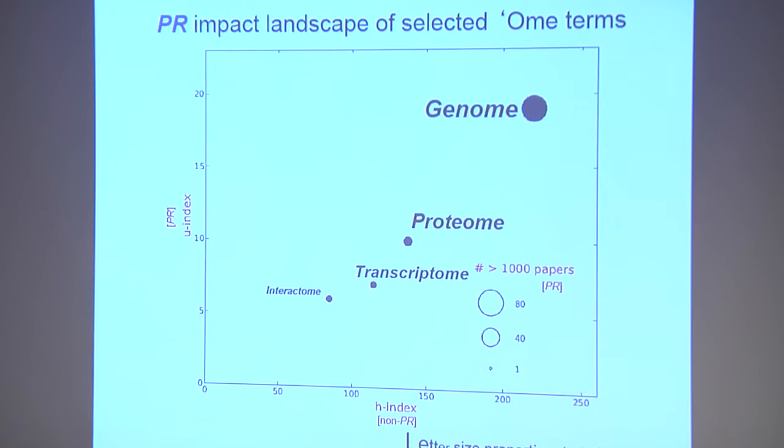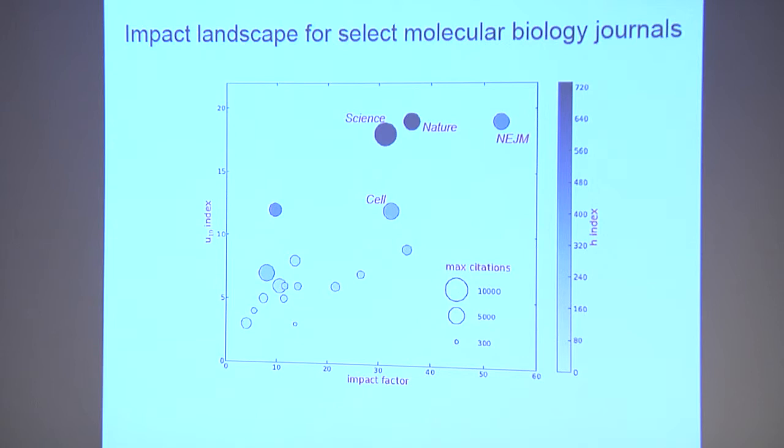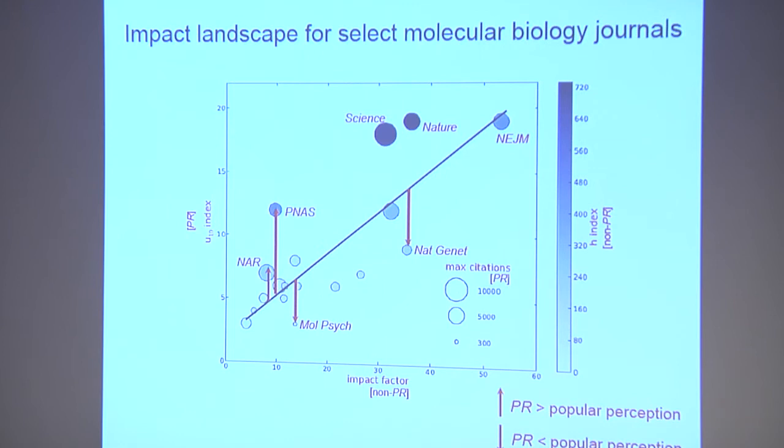Finally, you can look at journals — that's what started the impact factor altogether. Here is the landscape of journals. Science, Nature, New England Journal tend to be very exceptionally scored. In this case the non-PR measure is the impact factor. But you can find disparities. Here are four examples where the measurement by the PR index is higher or lower than the expectation based on simple impact factor.